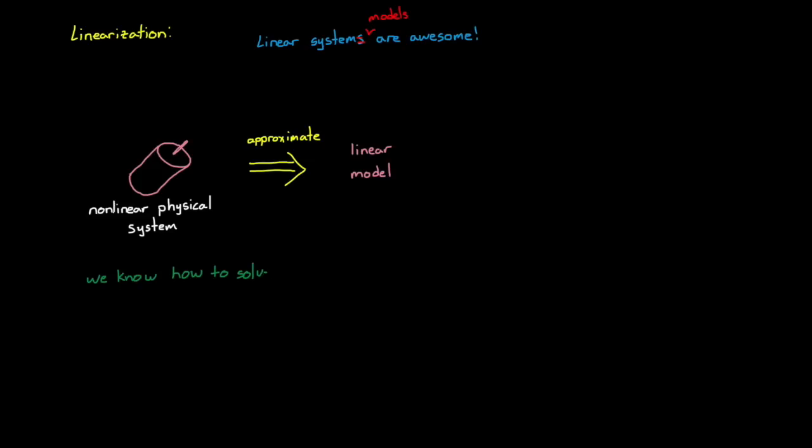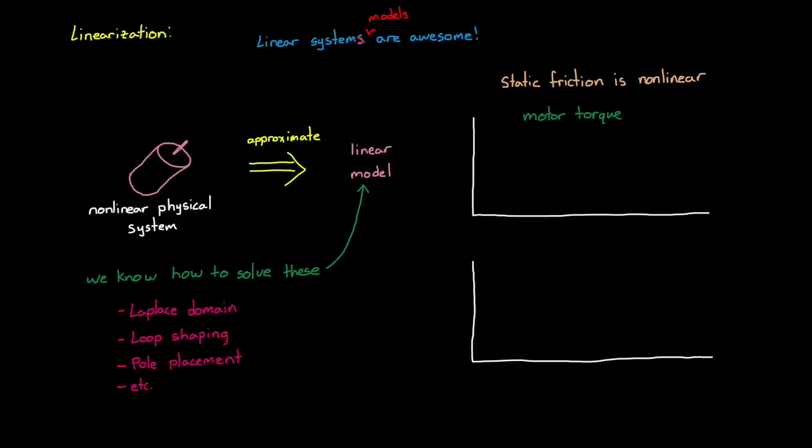And why are we trying to shoehorn all of these systems into linear models? Well, it's because we know how to solve linear models, and we've built up a whole lot of tools that we can use to design and tune control systems with linear plants. Do you want to work in the Laplace domain? Do you want to do loop shaping or pole placement or some other classical linear control technique? Then you're going to need a linear model. Well, for our DC motor, the static friction that I mentioned earlier is non-linear behavior. This is because the motor won't spin until the torque is strong enough to overcome the static friction. So there's this range of very low input voltages that don't actually produce a spinning motor.